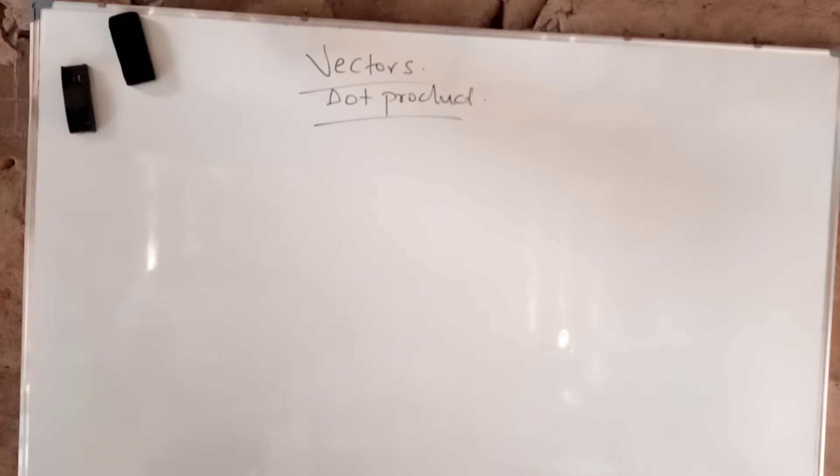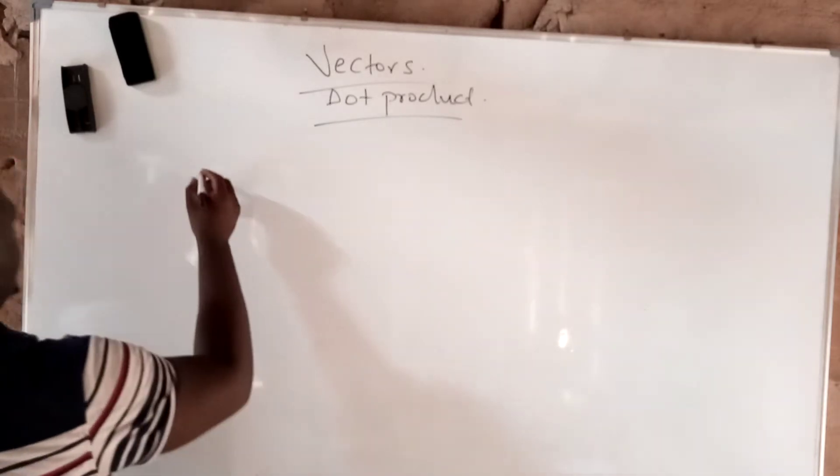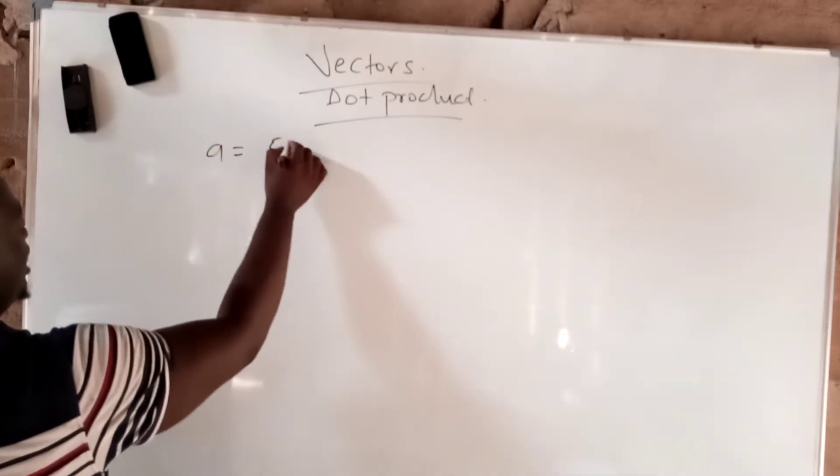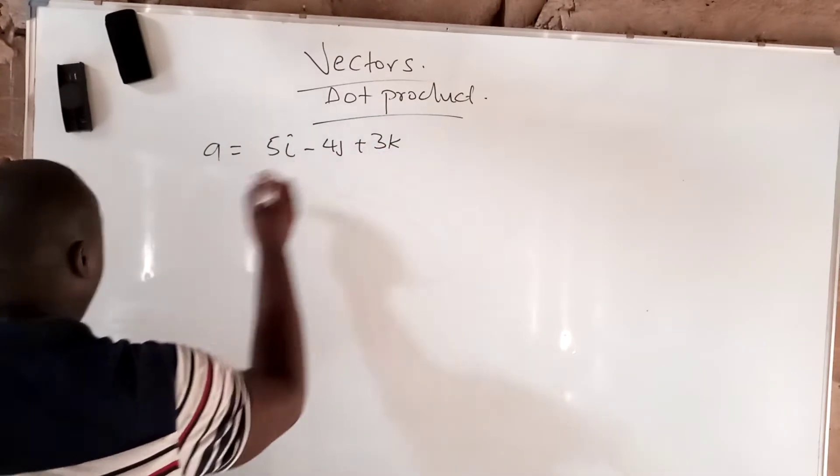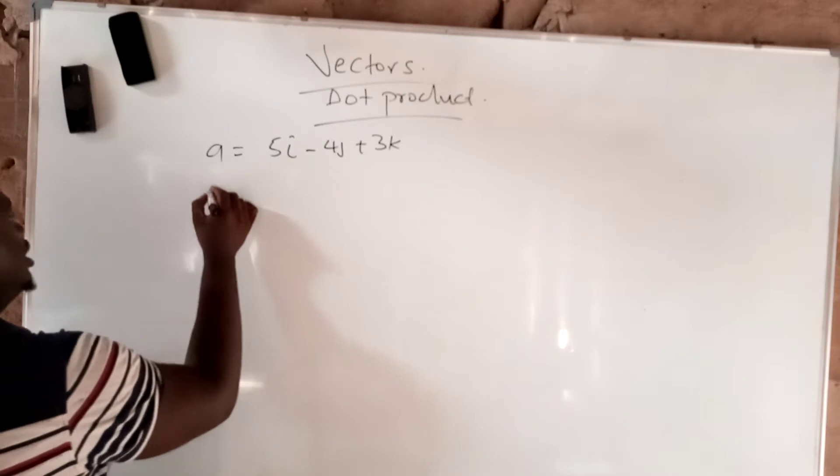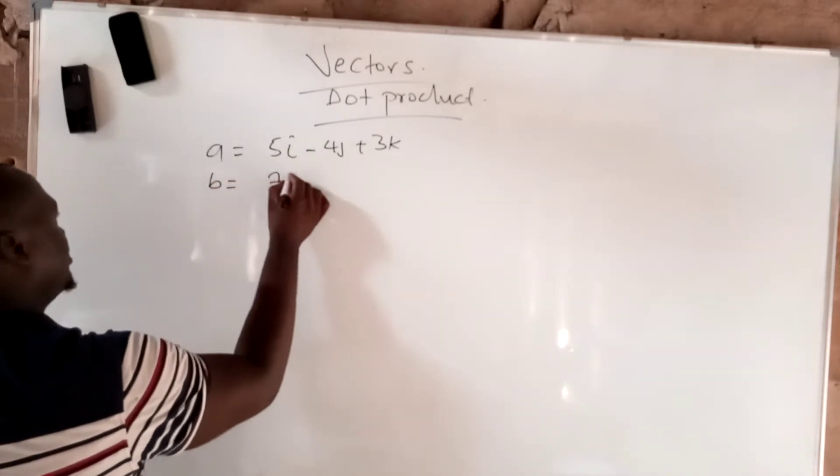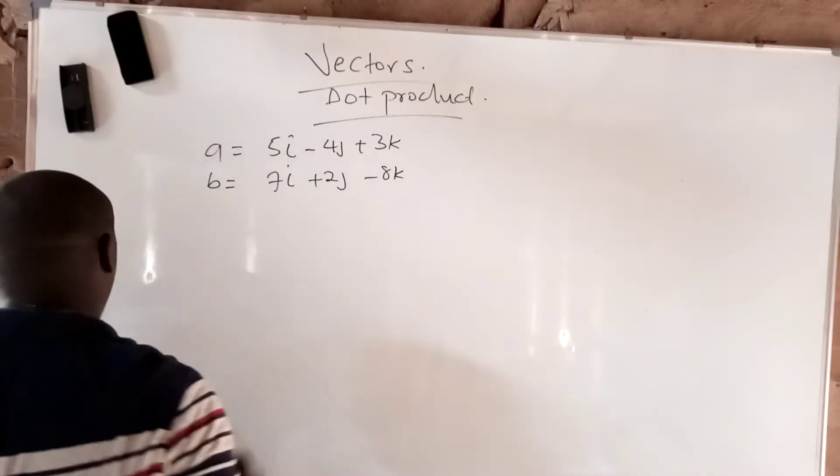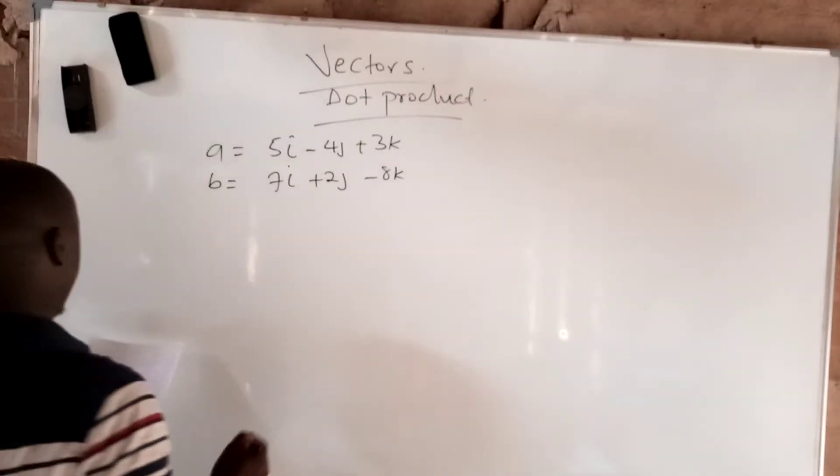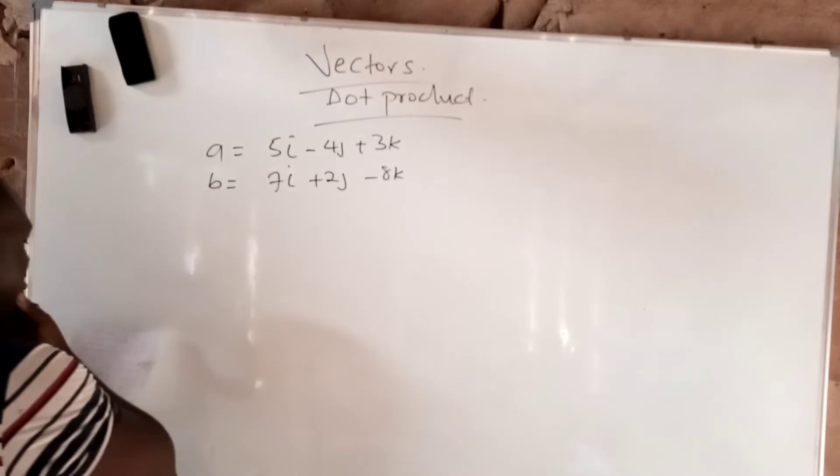If you have a vector a equals 5i minus 4j plus 3k, and b equals 7i plus 2j minus 8k, now a dot b - we have done it before.